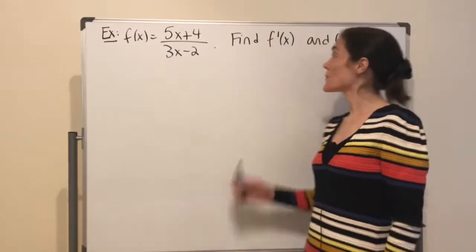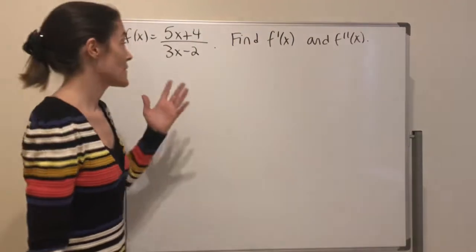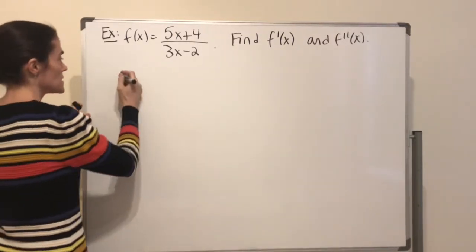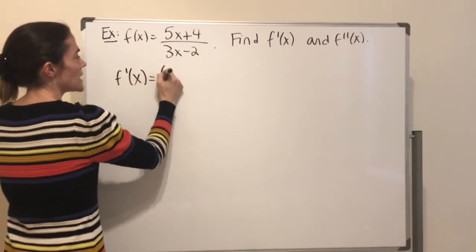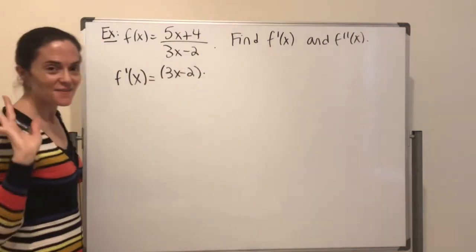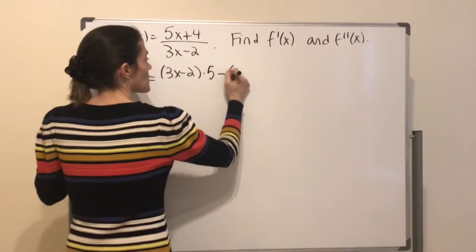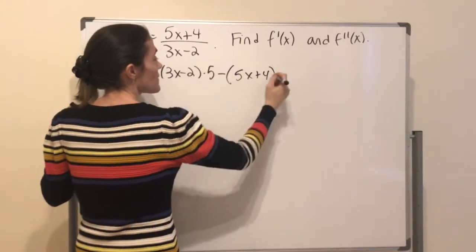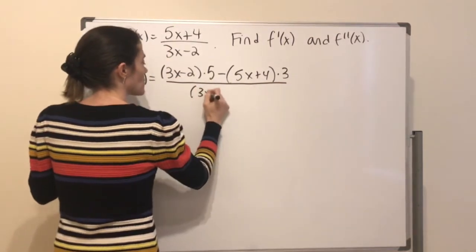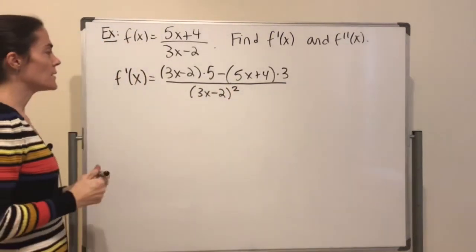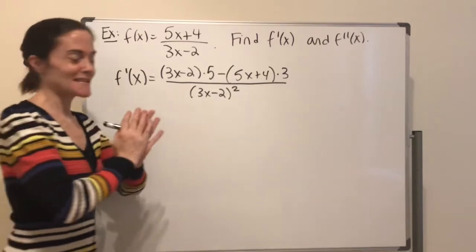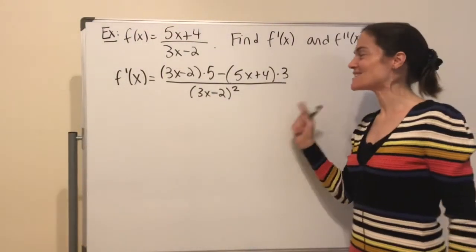Here's our next example: find the first and second derivatives for a function that is clearly a quotient — one function divided by another. The first derivative: denominator times derivative of the numerator — the numerator has derivative 5 — minus the numerator times derivative of the denominator. The denominator has derivative 3, all over denominator squared. If all I needed was the first derivative, I'd stop here. But I need to differentiate again.